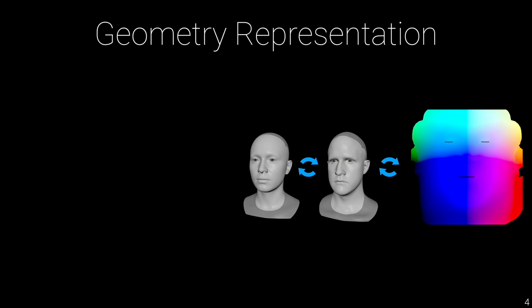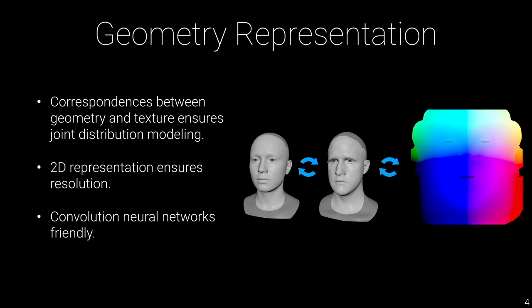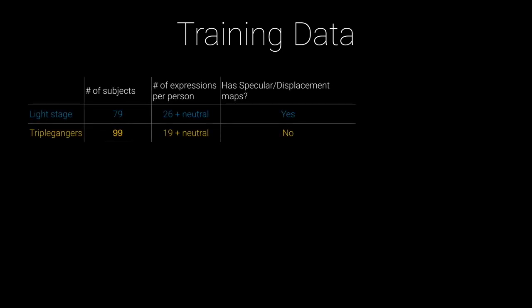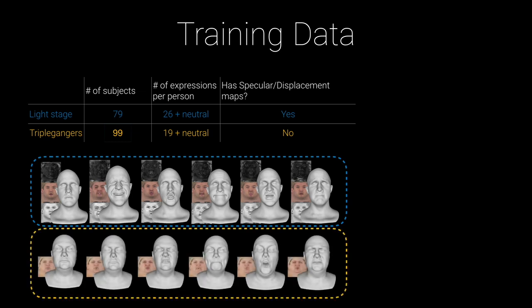This 2D UV representation has several benefits. First, it allows correspondence between geometry and texture, enabling joint distribution modeling. Second, as each pixel represents a single point in 3D, a 2K×2K geometry map can store up to 4 million vertices, satisfying most high-quality scan data storage needs. Third, the field of convolutional neural networks is well developed, and representing geometry in 2D lets us leverage the most advanced CNN technologies. Our database includes both high-resolution geometry and physical measurements of skin reflectance properties. To bootstrap the database with large diversity of identities, we also introduce high-resolution TripliGanger data, giving us around 4,000 scans in total for training.